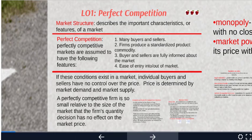Perfectly competitive markets are assumed to have four features. First, there are many buyers and sellers — so many that each buys or sells only a tiny fraction of the total market output, ensuring no individual buyer or seller can influence the price. Second, firms produce a standardized product or commodity — a product identical across suppliers, such as a bushel of wheat, corn, or a share of Google stock. Because all suppliers offer an identical product, no buyer is willing to pay more for one particular supplier's product. Third, buyers are fully informed about price, quality, and availability, and sellers are fully informed about all resources and technology.